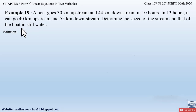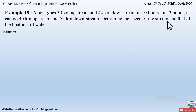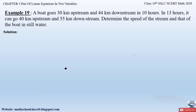First of all let us understand the meaning of stream and still water. In a stream, the water is moving in any one direction, whereas in still water the water doesn't move — stagnant water is called still water.